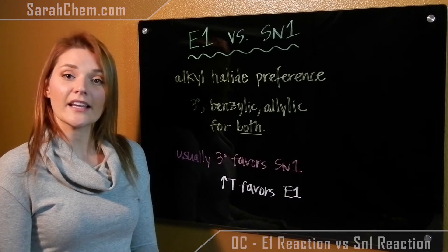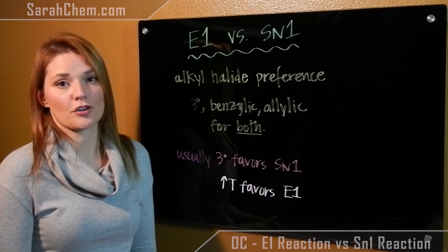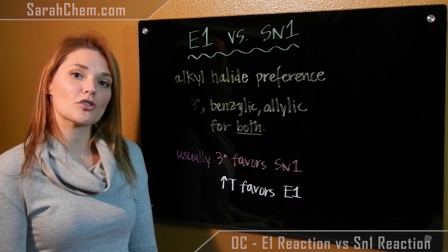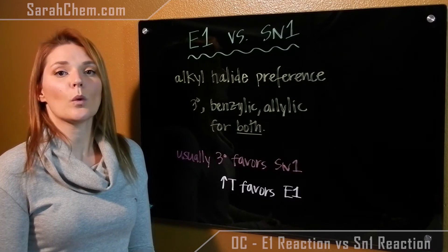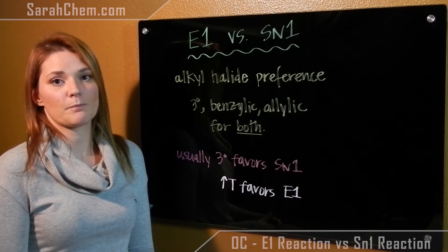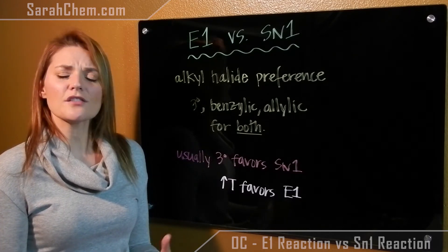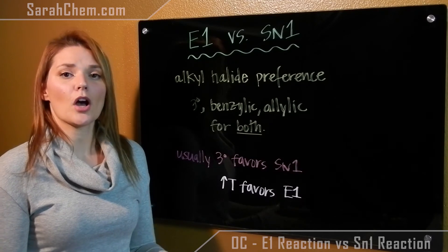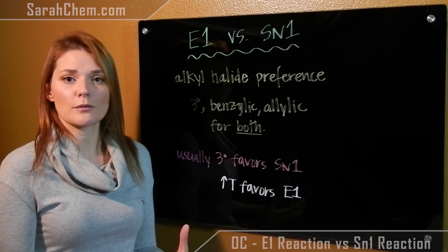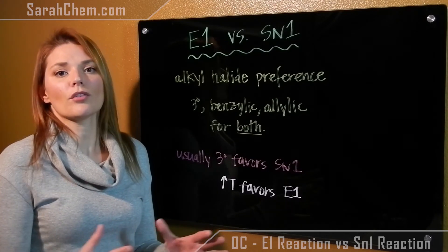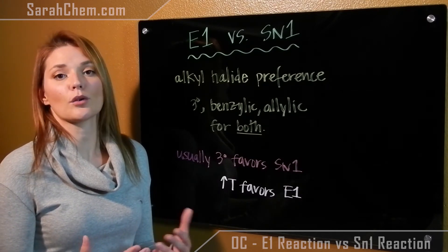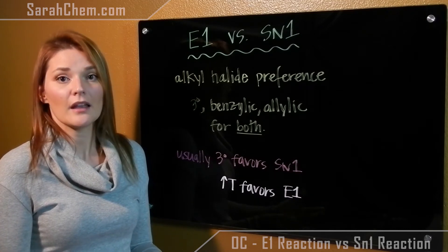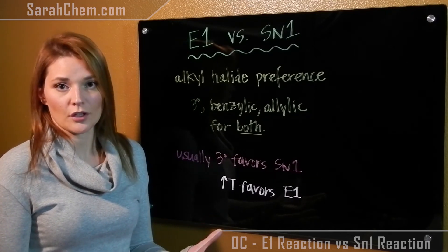The second factor that comes into play is temperature. Usually the higher the temperature, the greater the preference for an E1 reaction is. The reason for that is this: when you increase the temperature, the contribution of entropy to the overall Gibbs free energy value is increased and becomes more important. Entropy favors disorder.